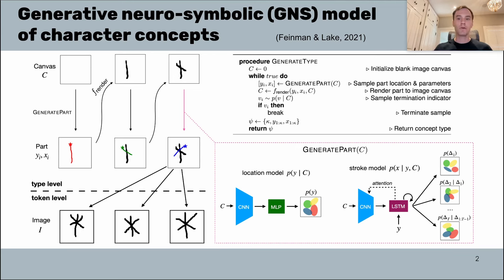All of the parameters of this GNS model, both the type and the token level, are fit using a background set of characters from a subset of the Omniglot dataset. Later on, the model was evaluated on different tasks using novel characters from new, unseen alphabets.